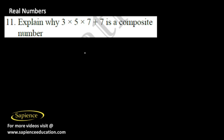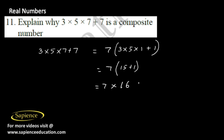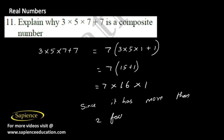Explain why 3 into 5 into 7 plus 7 is a composite number. Taking 7 as common: 7 into (3 into 5 plus 1) equals 7 into 16. This number can be written as 7 into 16 into 1. Since prime numbers have only 2 factors, but this number has more than 2 factors — namely 7, 16, and 1 — it is composite.